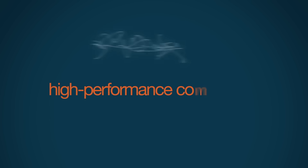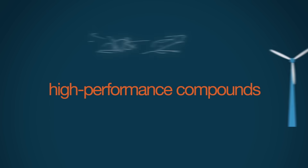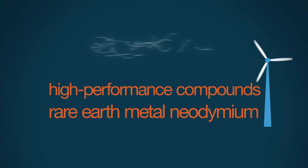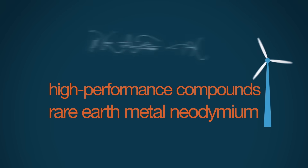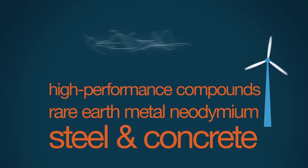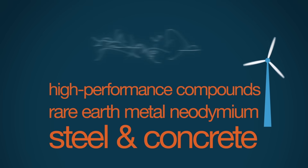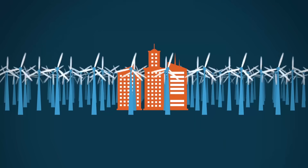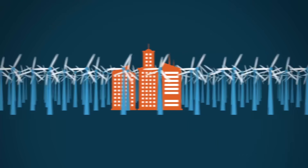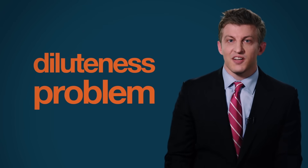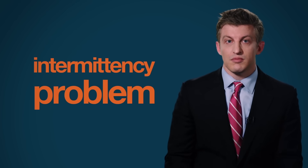For wind, needed materials include high-performance compounds for turbine blades and the rare earth metal neodymium for lightweight specialty magnets, as well as the steel and concrete necessary to build structures — thousands of them as tall as skyscrapers. And as big a problem as diluteness is, it's nothing compared to the intermittency problem.